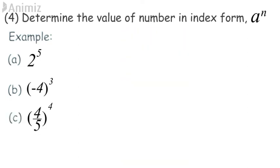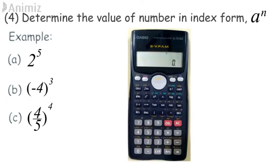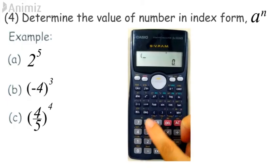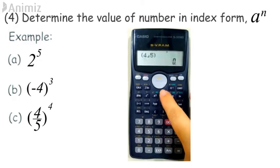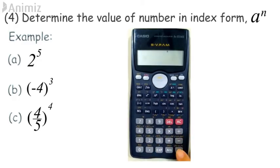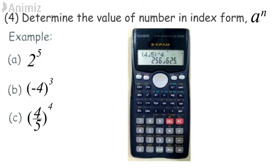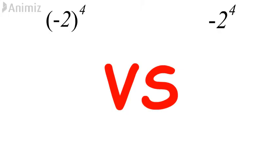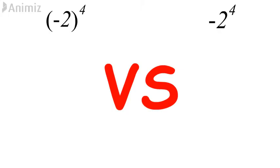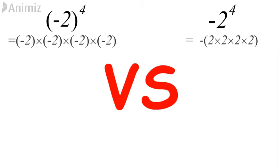Example C: similarly, the repeated multiplication method can be used to solve this problem. Using a scientific calculator: press open bracket, 4/5, close bracket, to the power of 4, then press equals to get 256/625. Reminder: negative or fractional bases must be placed within brackets when using a calculator.